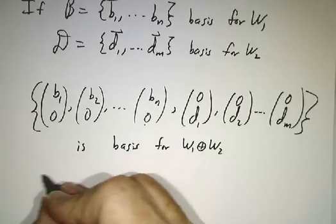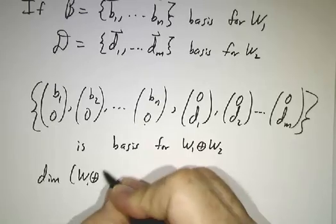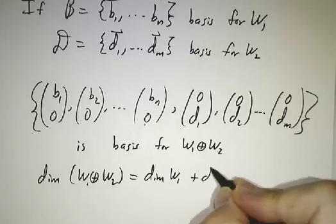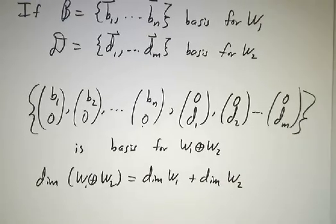In particular, this means that the dimension of the direct sum is the dimension of W₁ plus the dimension of W₂. So that's how big the direct sum is.